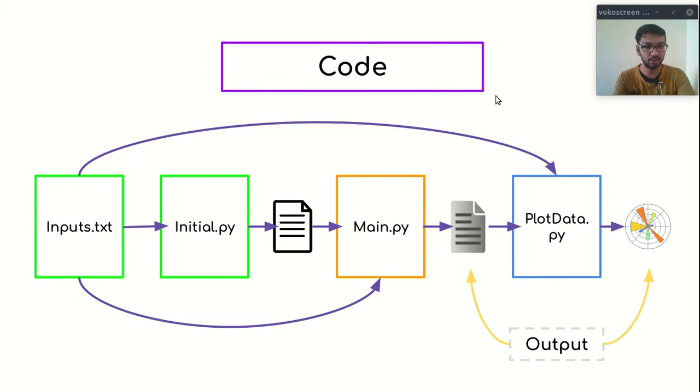And, this is the structure of our code. So, I will write all my inputs into this inputs.txt file. Then, these inputs are going to be read by this initial.py file. It will create a dummy file, which will be helpful to our main.py file. This is the actual file in which I have written Boris algorithm. And, this file will create our output. And, if we want to visualize this output, then we can use plot_data.py file, and it can create matplotlib plots.